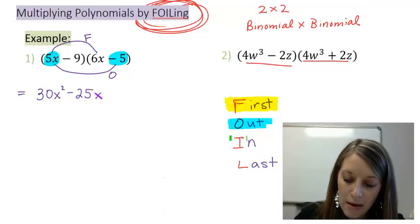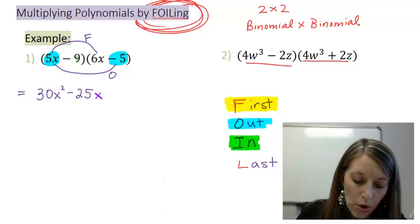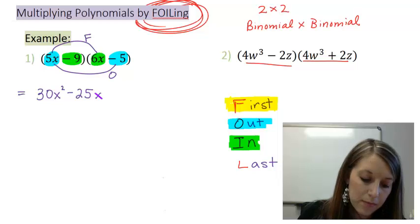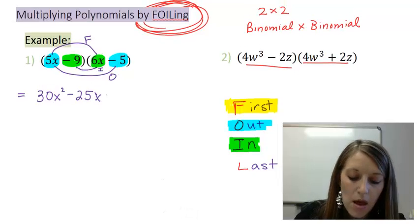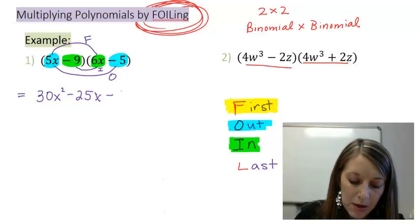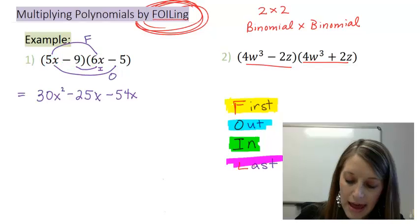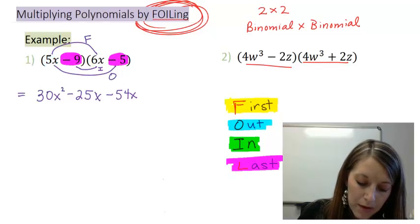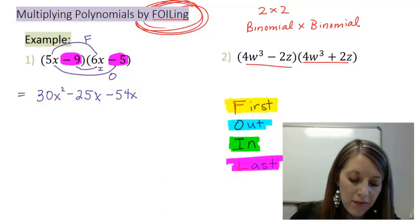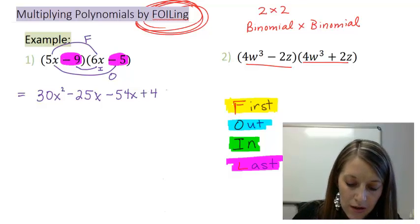Next, I look at my inside term or negative 9 times 6x. Negative 9 times 6 gives me a negative 54x. And last, I take my last terms and multiply them. So negative 9 times negative 5 gives me a 45.